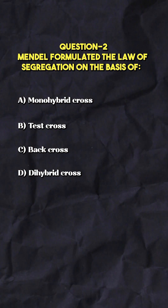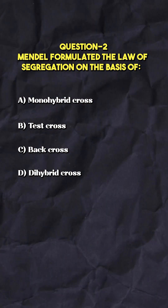Next question: Mendel formulated the Law of Segregation on the basis of what? According to Mendel's Law of Segregation, when gamete formation takes place, the pair of alleles in a gene separate and each gamete contains only one allele of a gene. This law is also known as the purity of gametes law, and it has been proved by monohybrid cross.